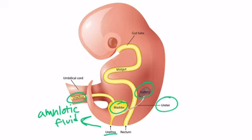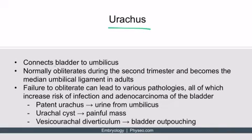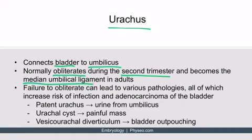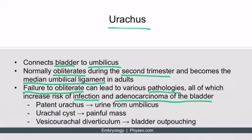The urachus connects the bladder to the umbilicus. Normally it obliterates during the second trimester, and eventually becomes the median umbilical ligament in adults. If there is a failure to obliterate, this can lead to various pathologies, all of which increase the risk of infection and adenocarcinoma of the bladder.